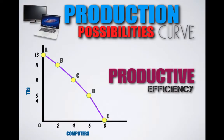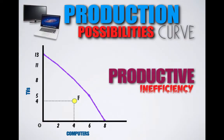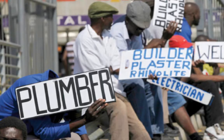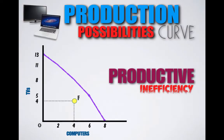Every country would like to produce on their production possibilities curve. A country that produces inside of their production possibilities curve, like Point F represented here, is experiencing productive inefficiency. At Point F, Country B is producing four TVs and four computers; however, they are wasting scarce resources and could be producing more. The most common type of productive inefficiency is excessive unemployment. By having excessive unemployment, the labor of workers is being wasted — workers are willing and able to supply their labor, but they're not being utilized because they can't find jobs. As a result, a country will produce below their capacity and within their production possibilities curve.